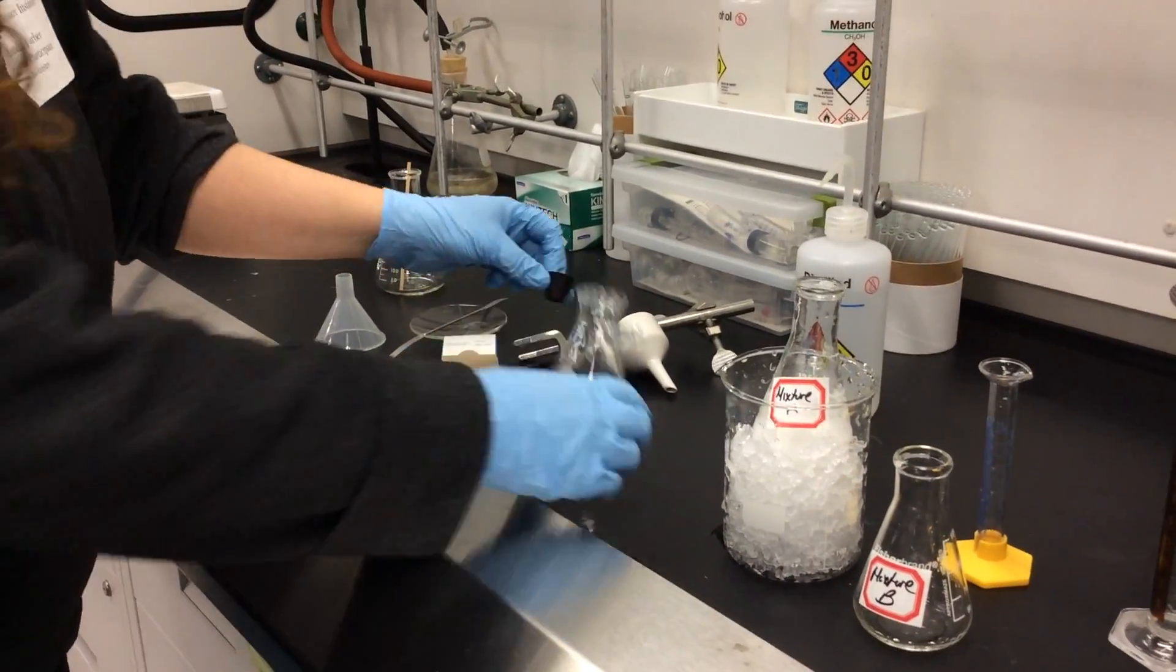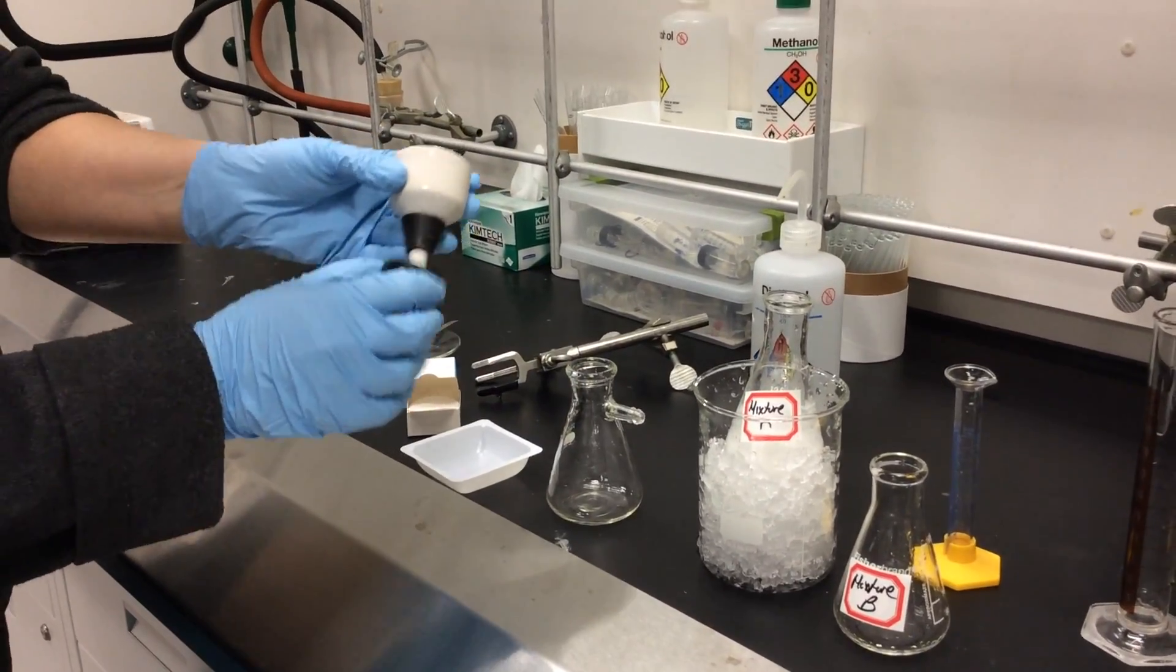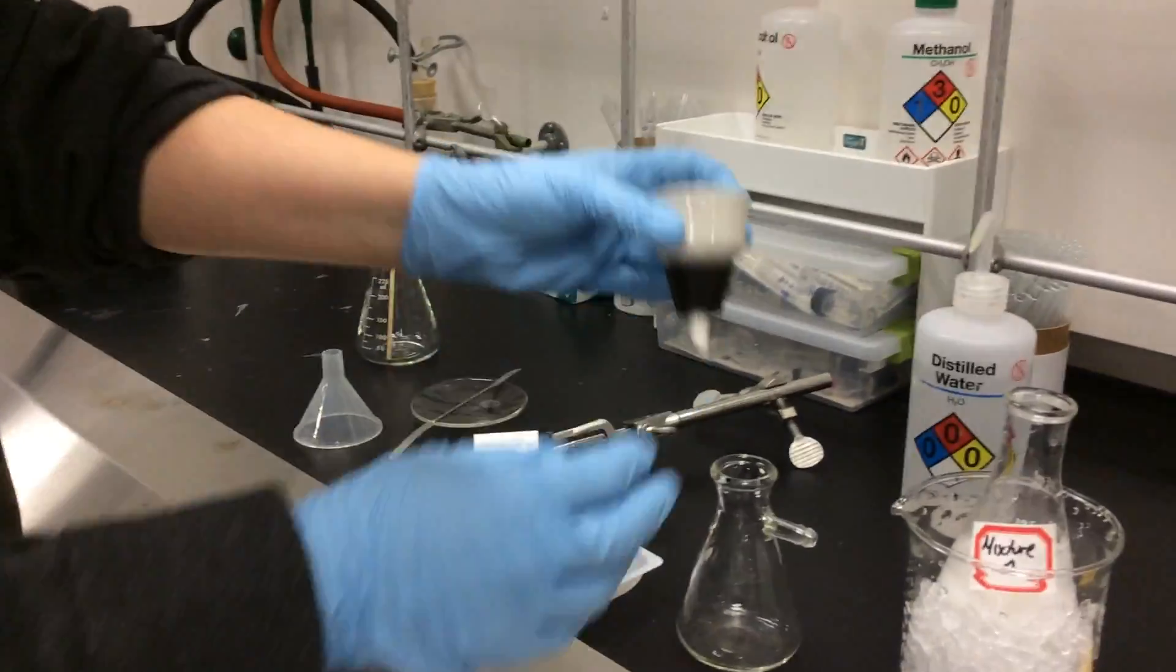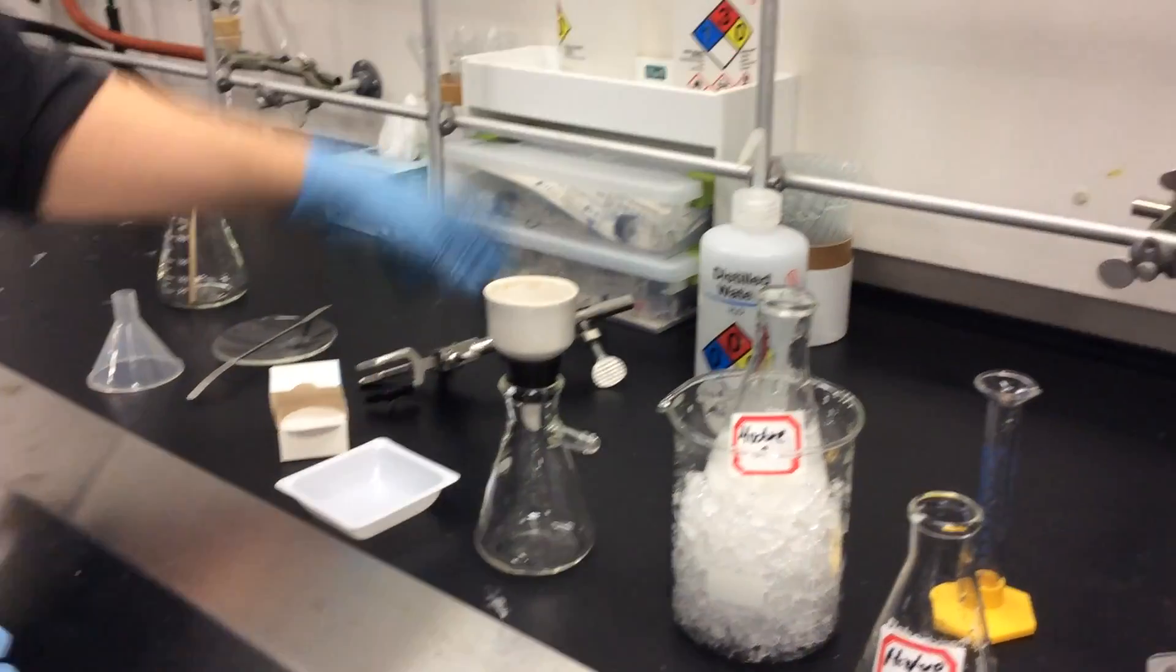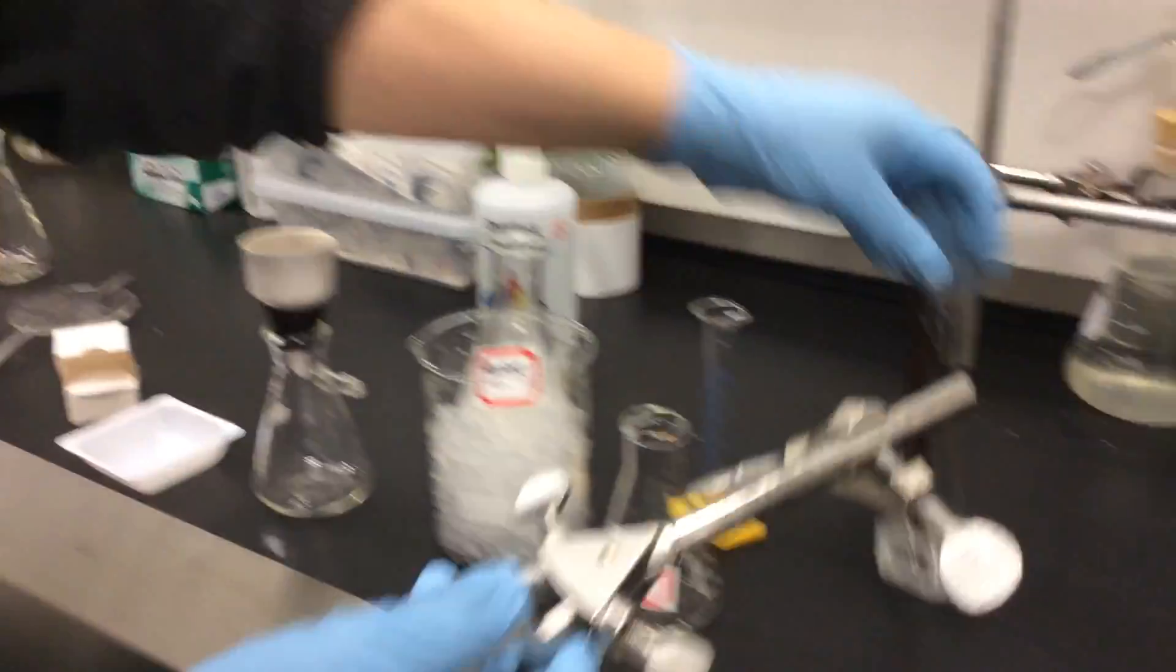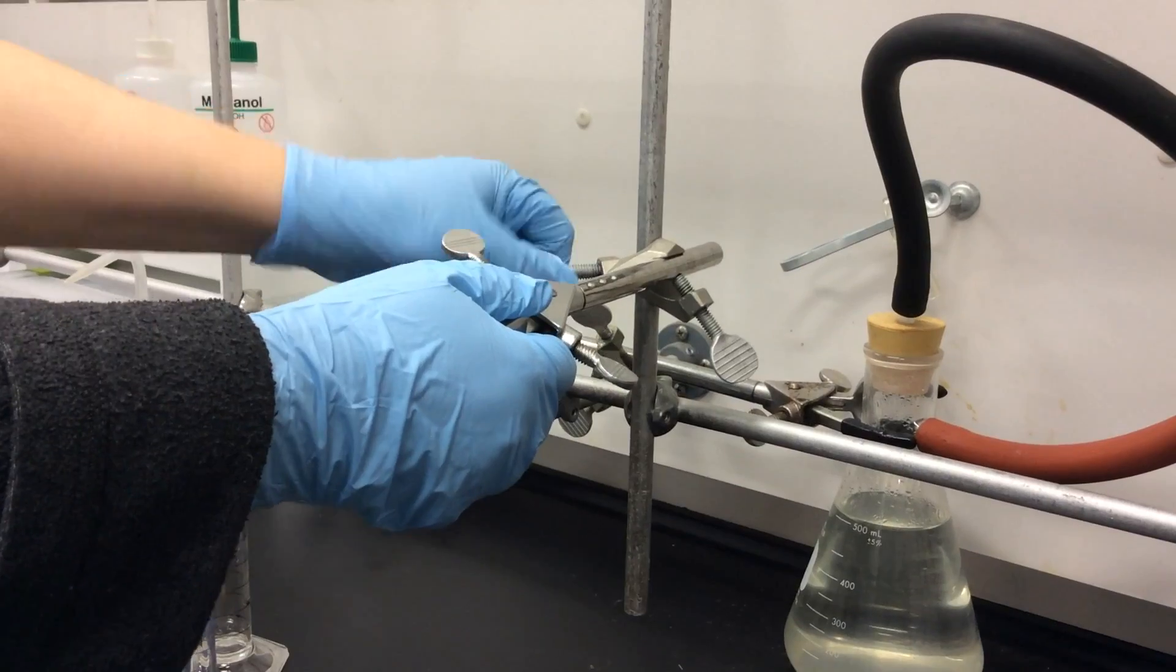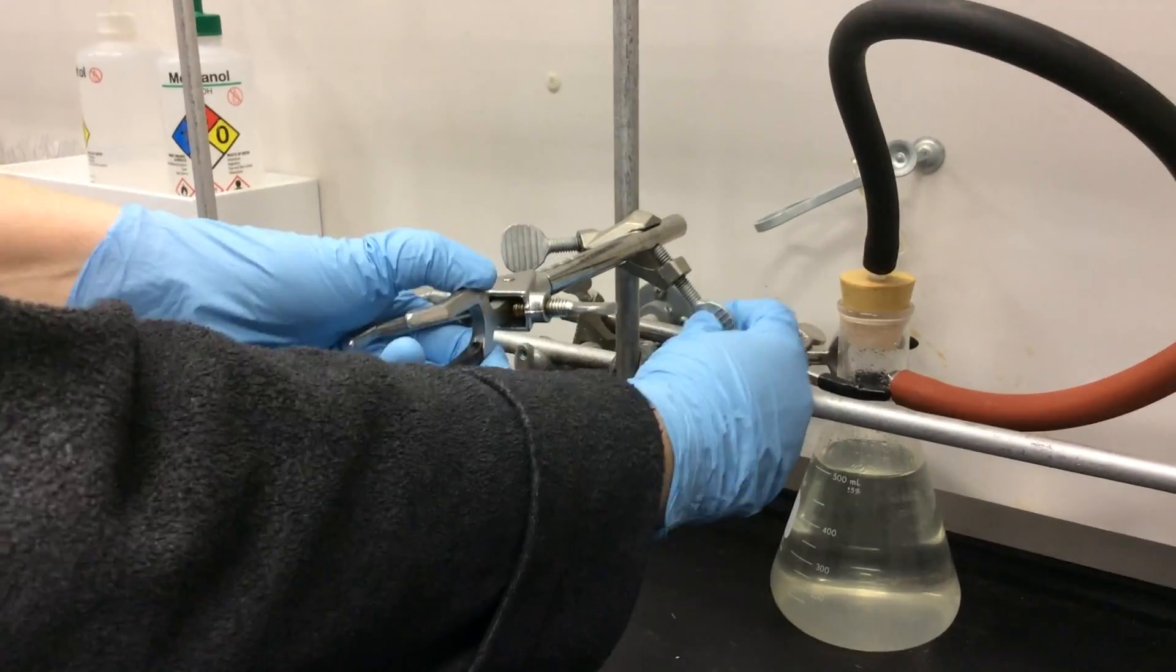You can see a Buchner funnel is being fitted with filter adapters, then into the filter flask. Once that's done, we have to attach it to the back of the hood. We do this with a clamp. We use the clamp to attach to the back of the hood. Once that is secure, we're going to take our vacuum filtration setup, the glassware, clamp it around.